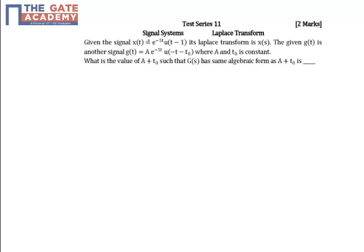In the given problem, two signals x(t) and g(t) are provided. If g(s) has the same algebraic form as x(s), then what is the value of a plus t_0? First, find x(s).